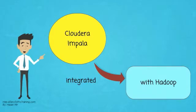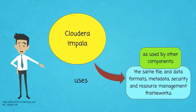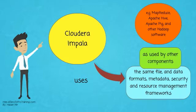Impala is integrated with Hadoop. It uses the same file and data formats, metadata, security, and resource management frameworks as used by other components. The components include MapReduce, Apache Hive, Apache Pig, and other Hadoop software.